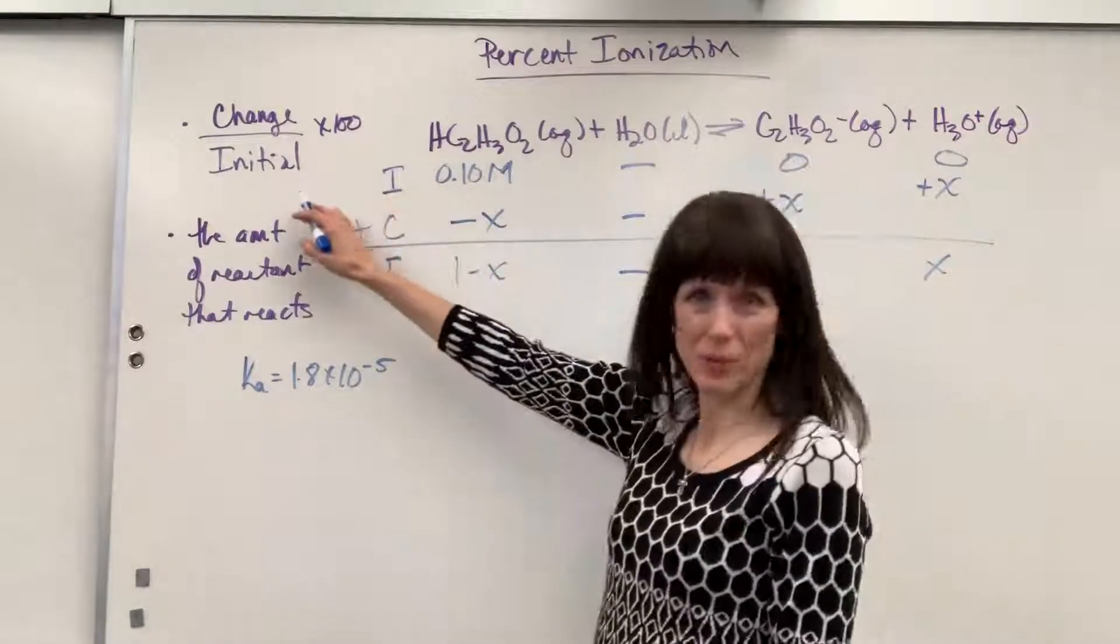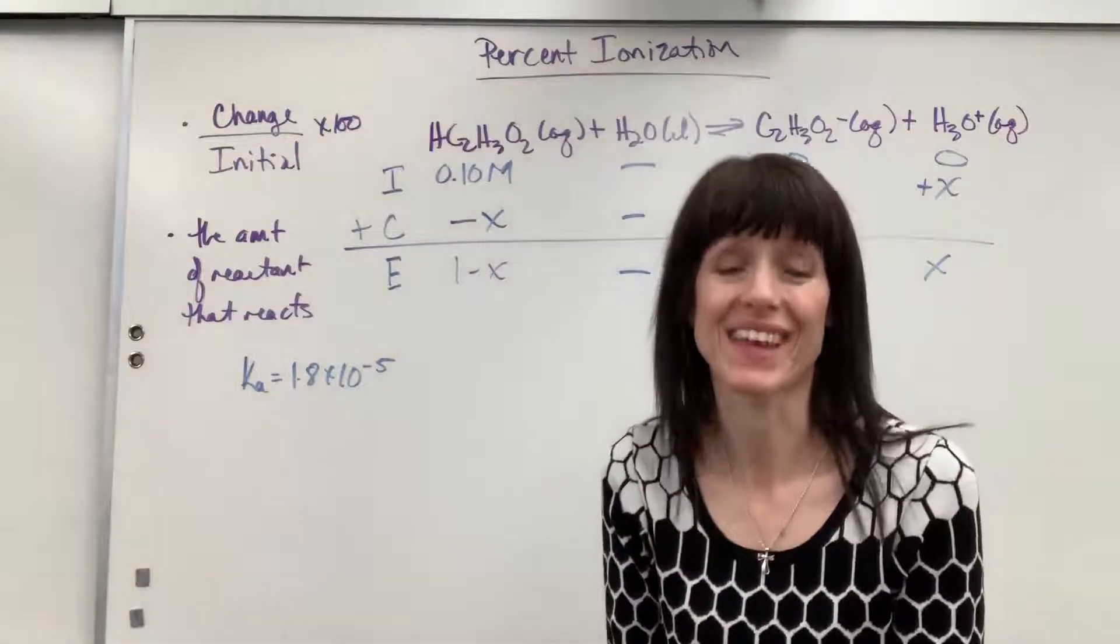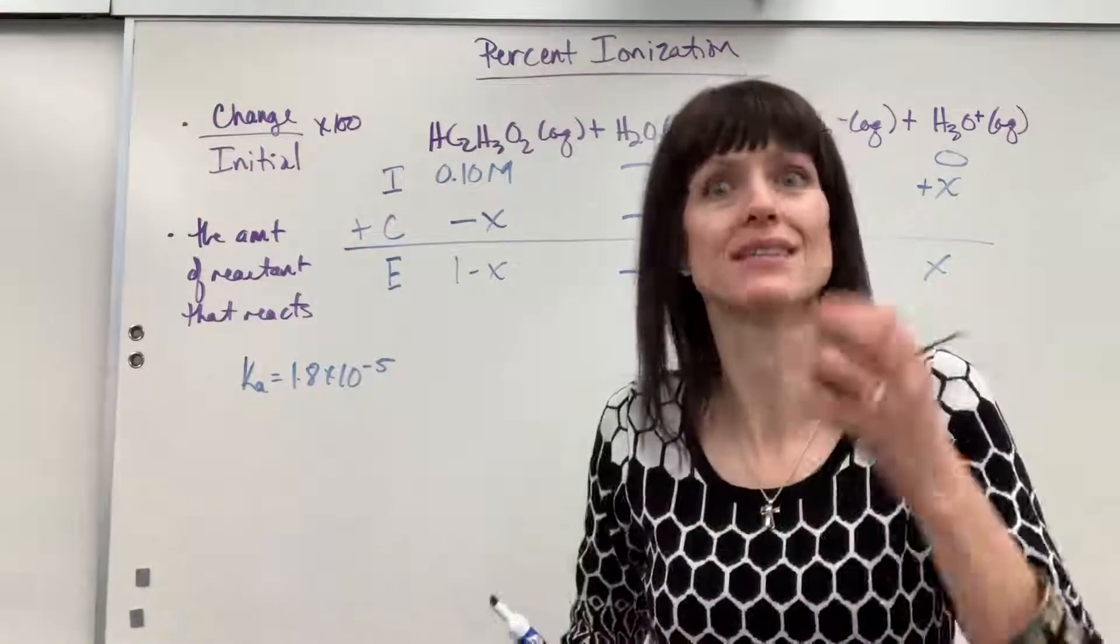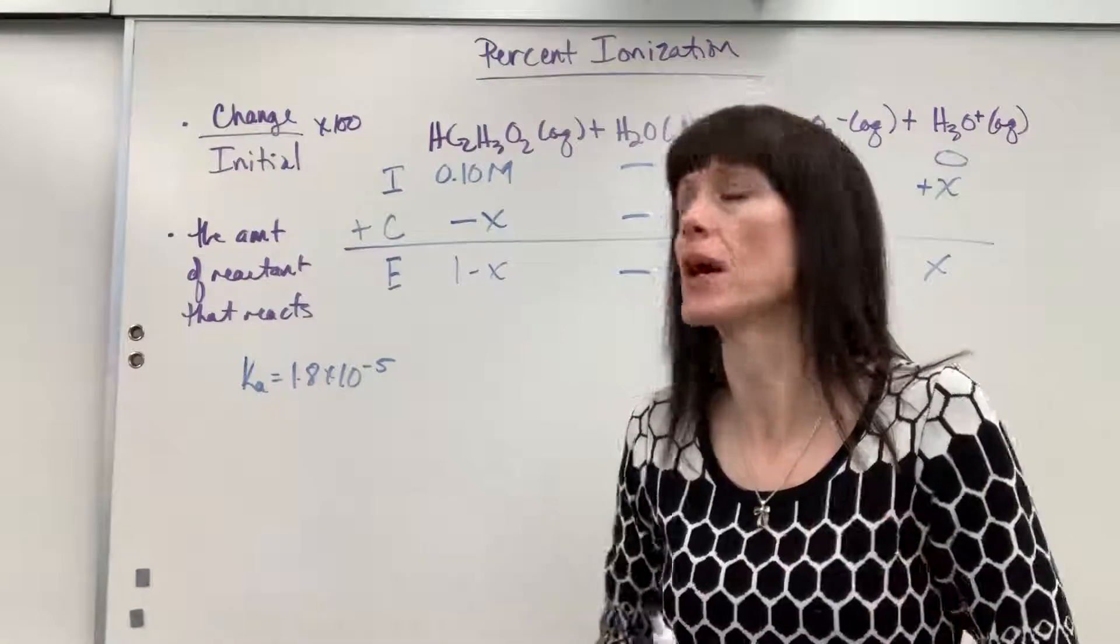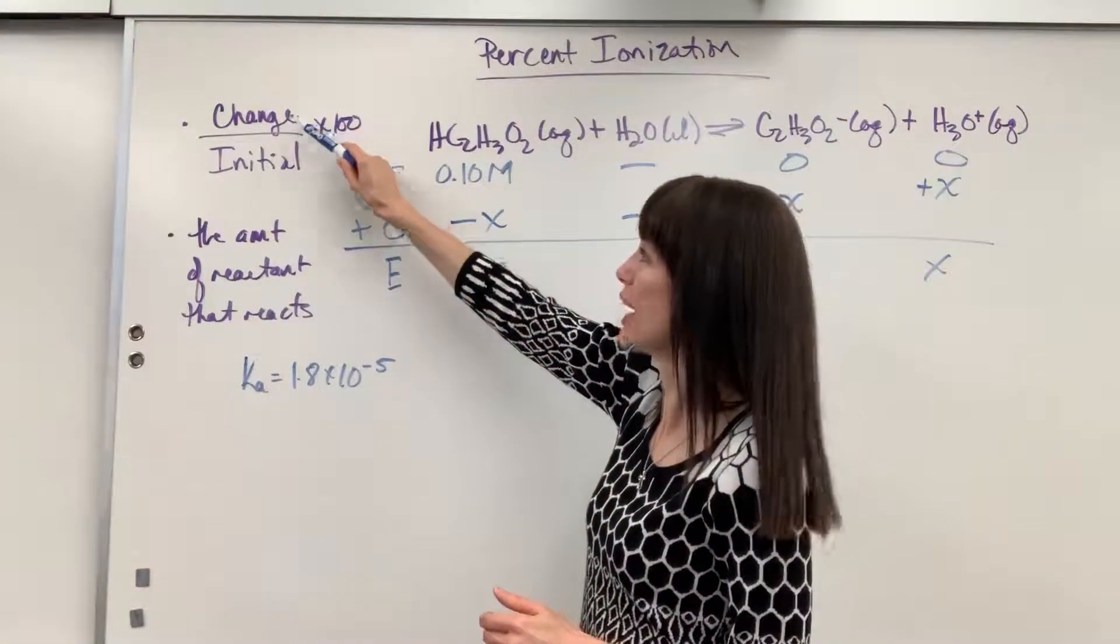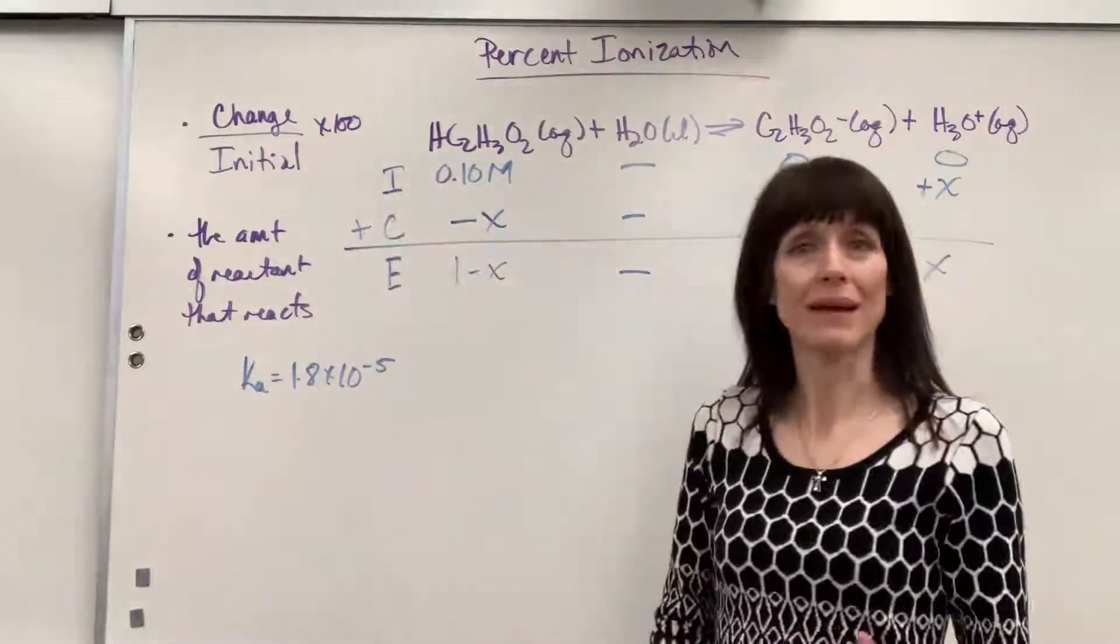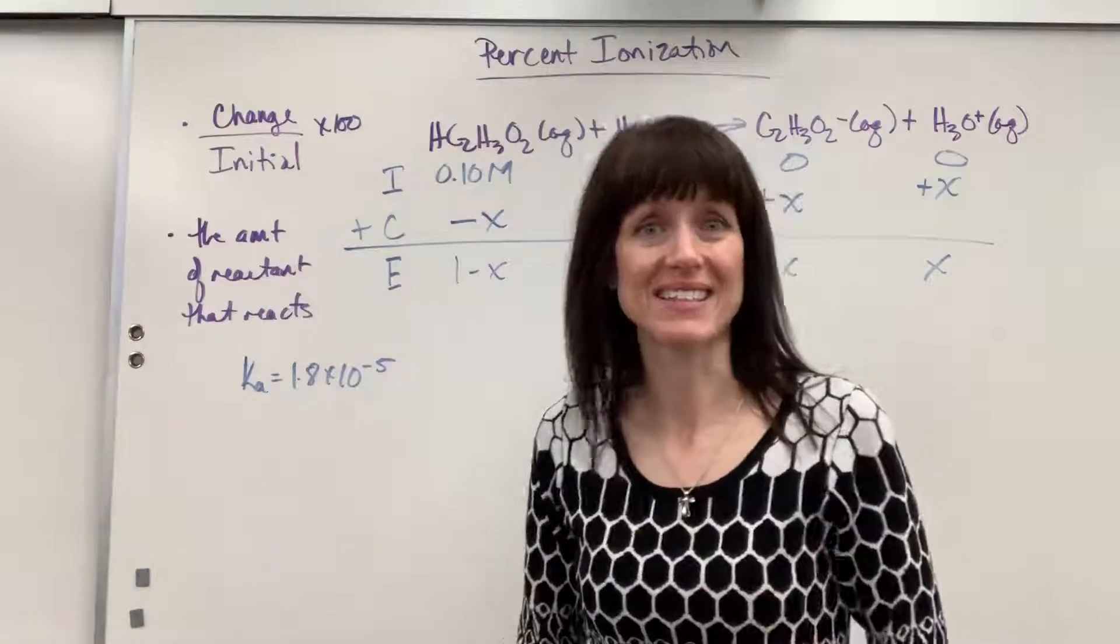So I wrote this formula for you. You just have to take the amount that changes, which is x. The amount that's consumed. That's the amount that's ionized, the amount that breaks apart. You take the amount that changes, the amount that's consumed or reacts, divide it by what you begin with, and you just multiply by 100 and bam, you have percent ionization.